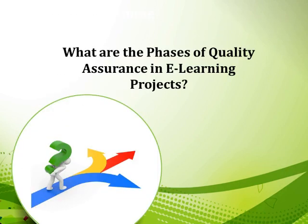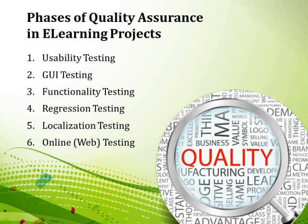We will now look at the phases of quality assurance in e-learning projects. There are six phases in the QA process: Usability Testing, GUI Testing, Functionality Testing, Regression Testing, Localization Testing, and Online Web Testing.